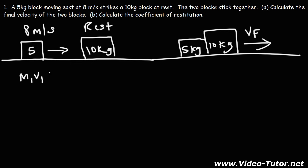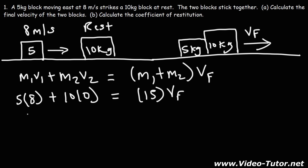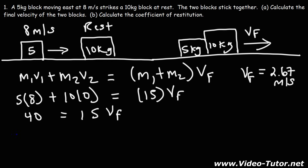The initial momentum — the total momentum before the collision — is going to be M1V1 plus M2V2, and that equals the final momentum, which is the sum of the two masses multiplied by their common final velocity. M1 is 5 kg, V1 is 8, M2 is 10, V2 is 0. M1 plus M2 is 15. So 5 times 8 is 40, equal to 15 Vf. V final is 40 divided by 15, which is 8 over 3, or approximately 2.67 meters per second.